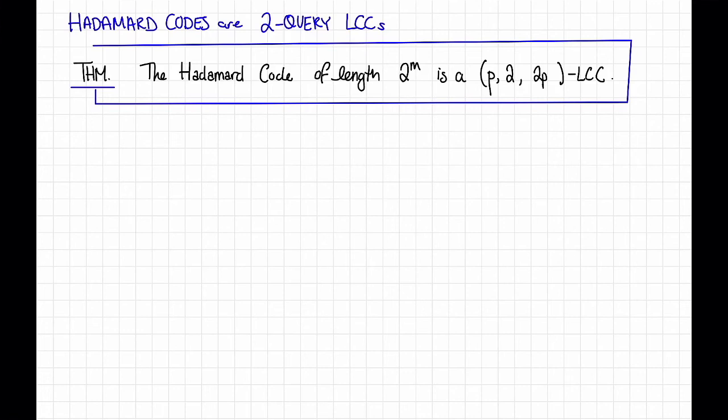So we've just shown this theorem. The Hadamard code of length 2 to the m is a (p, 2, 2p) locally correctable code for any p. And notably, this is interesting when p is strictly less than a quarter.